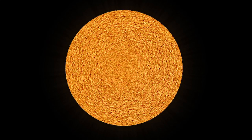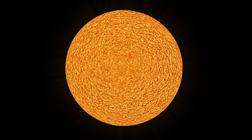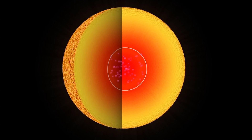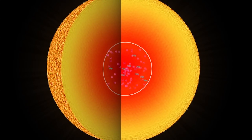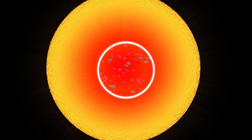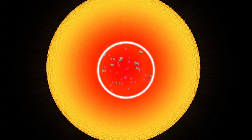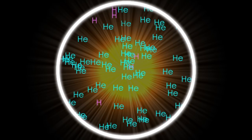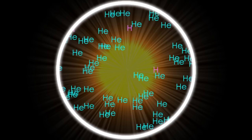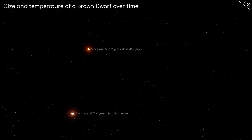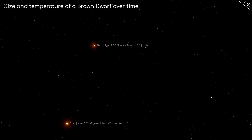Why this 0.08 solar mass cutoff? It's because stars with a mass above 0.08 solar masses are big enough for nuclear fusion to take place in the star's core, where the pressure there will convert hydrogen to helium as a power source. At this mass, as long as there is hydrogen to convert, it is self-sustaining, needing no external source to keep it hot. Brown dwarfs don't reach the mass and pressure at the core needed for nuclear fusion to take place, so they will eventually cool off.